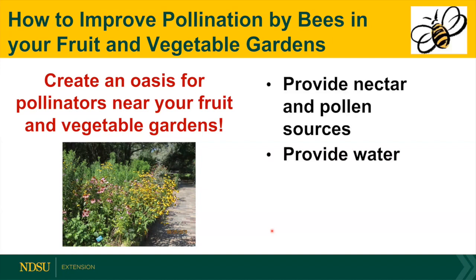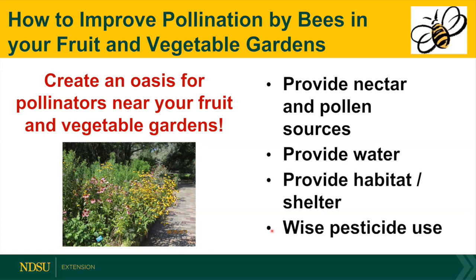We'll go over some of the things that you can do to improve bee pollination in your garden and make the garden more attractive. Here's what we'll talk about: provide nectar and pollen sources and what to provide, provide water, habitat and shelter for nesting, and wise pesticide use.